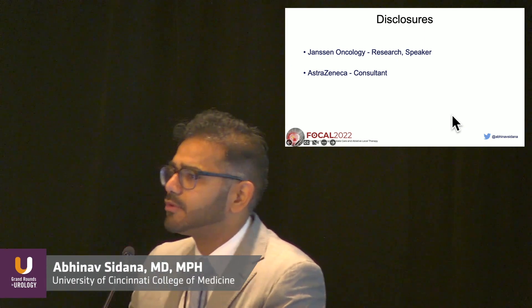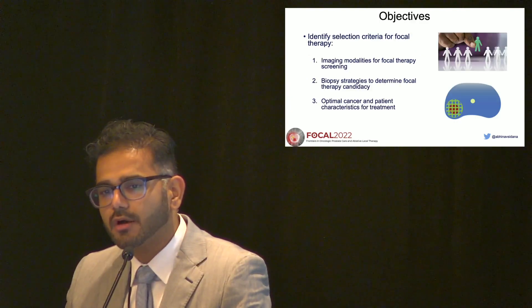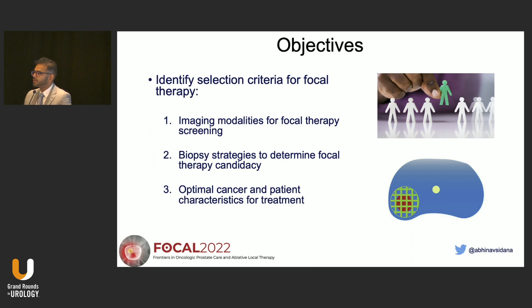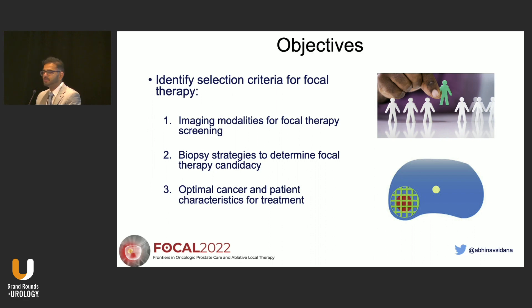I'm going to highlight some of the consensus statements and selection criteria, and there will be a little bit of repeat from Dr. Taneja's talk. The objectives are: what imaging modalities are needed to identify focal candidates; once you have found a potential candidate, how do you sample the prostate to rule out clinically significant disease from the proposed untreated area; and what are the selection criteria for an ideal patient for focal therapy.